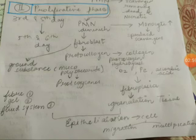In epithelialization, there is cell migration and cell multiplication. This concludes the proliferative phase.